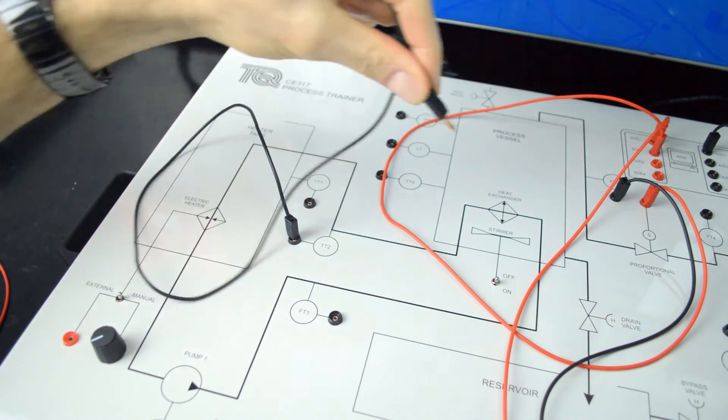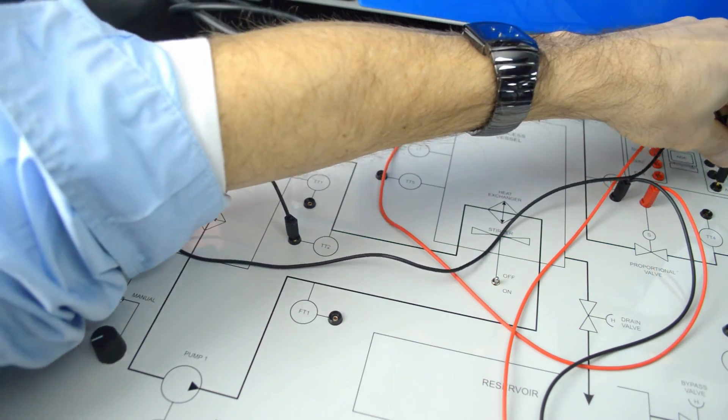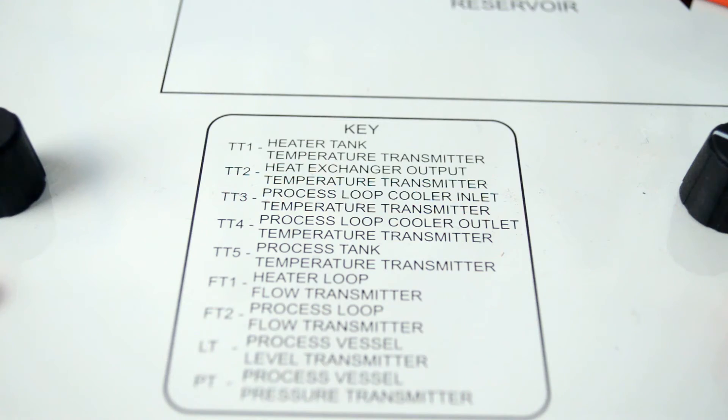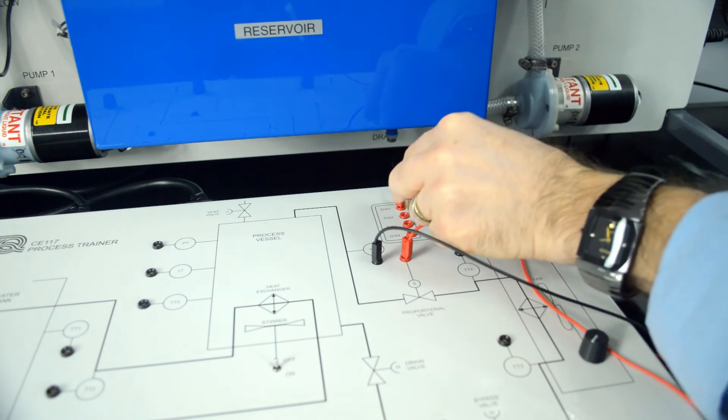It includes a clear mimic diagram with switches and controls to allow manual control of the pump speed, cooler fan speed, heater power and stirrer. It includes sockets and a built-in computer interface.